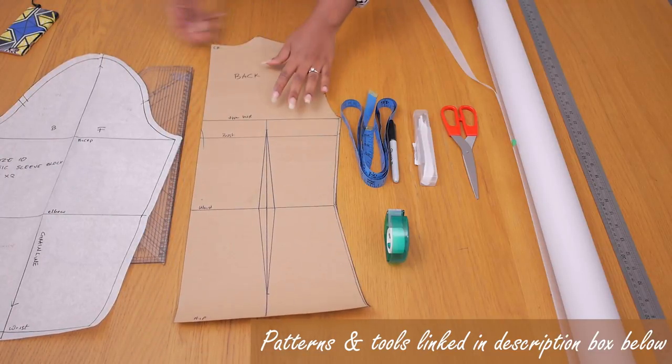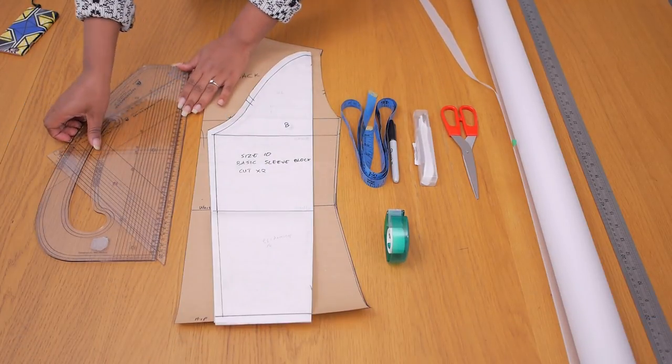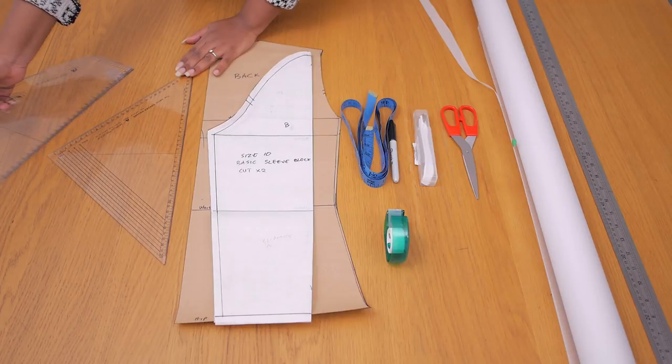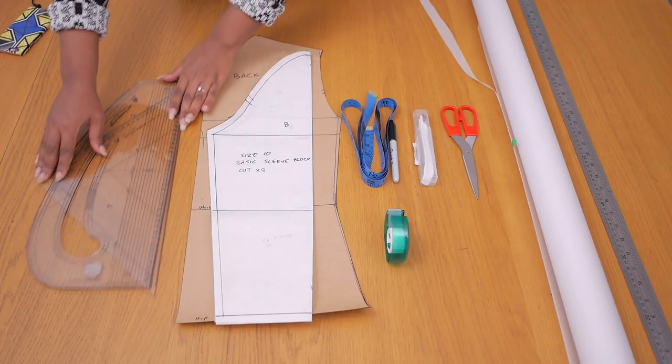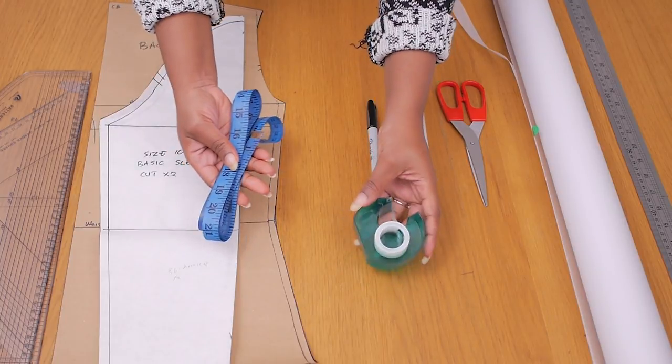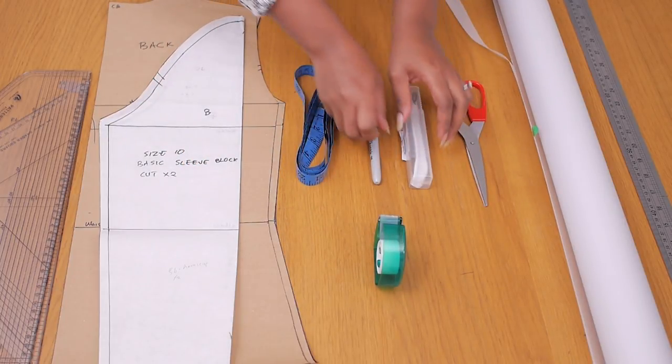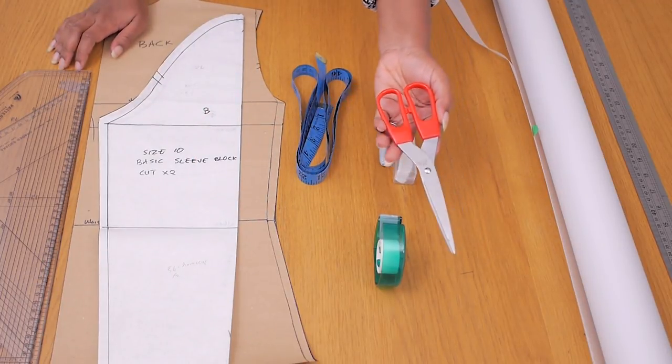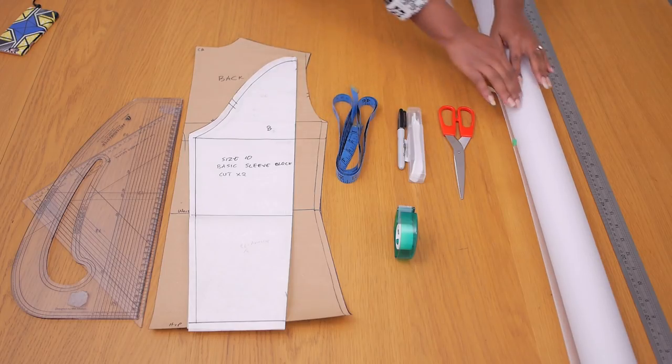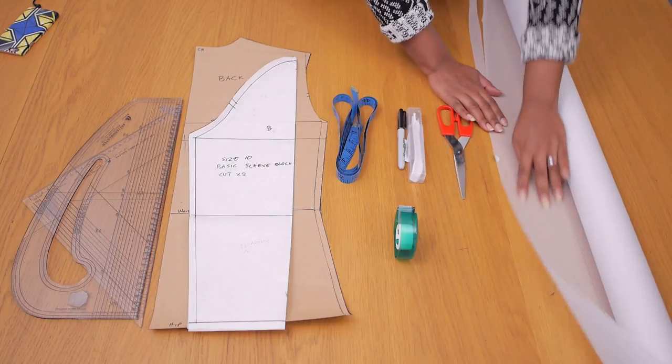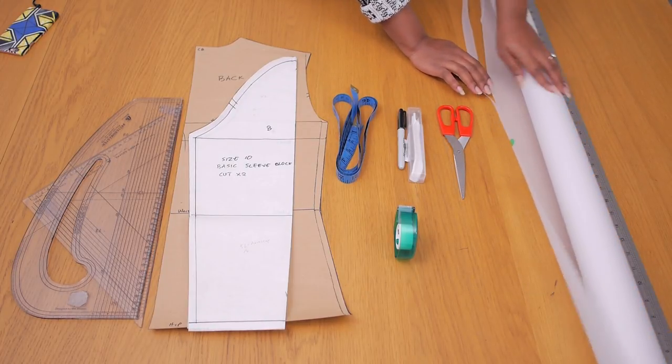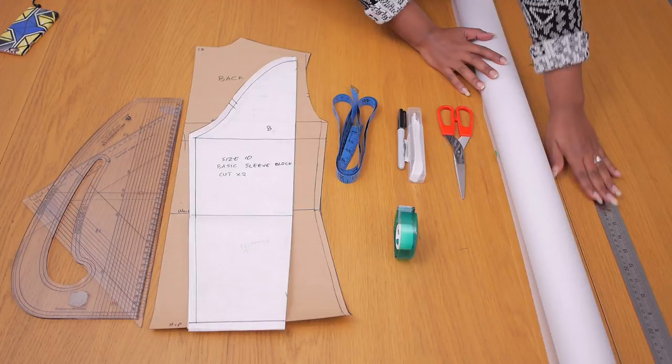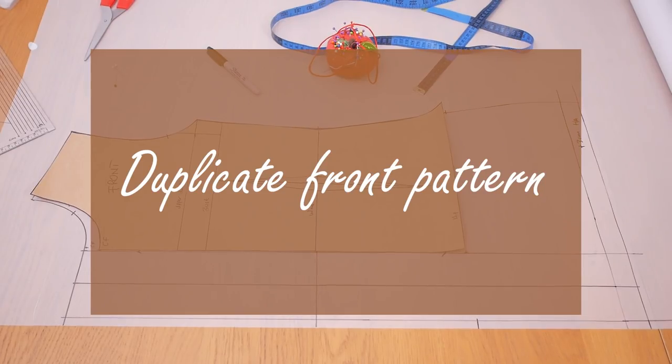I'm also going to be using my pattern master and set square. So along with those I'm going to be needing tape measure and some tape. I also have my marker pen and tracing wheel. I also have my paper scissors as well as my roll of pattern paper which I'm going to be linking down below. I've linked all of these tools and patterns in the description box for you guys.